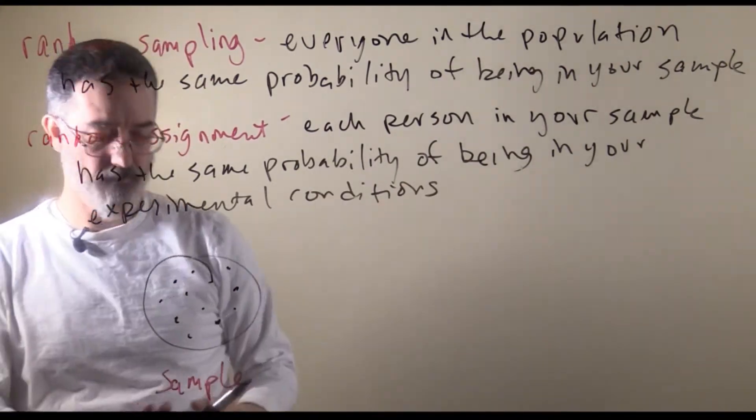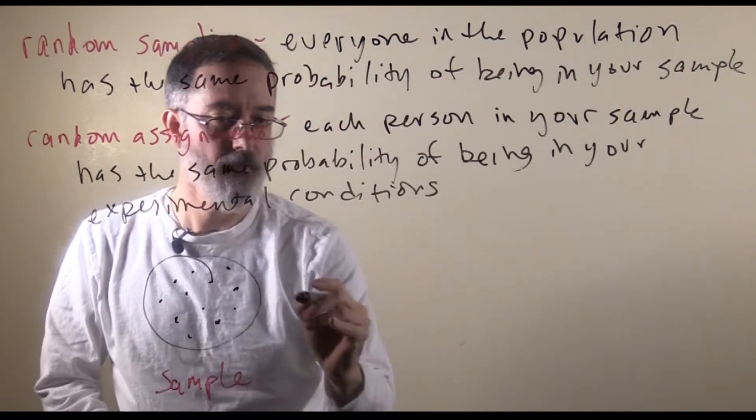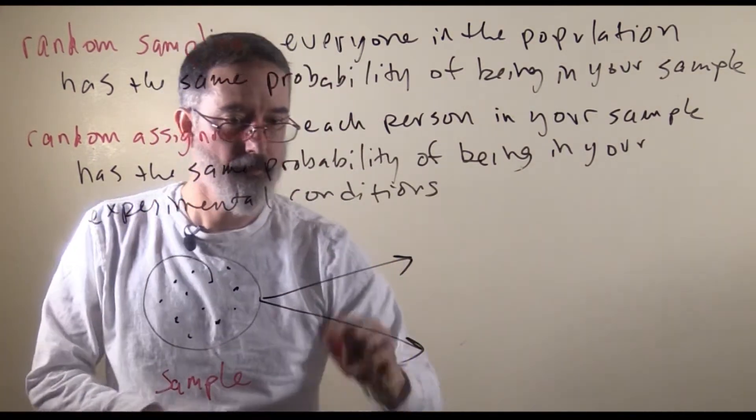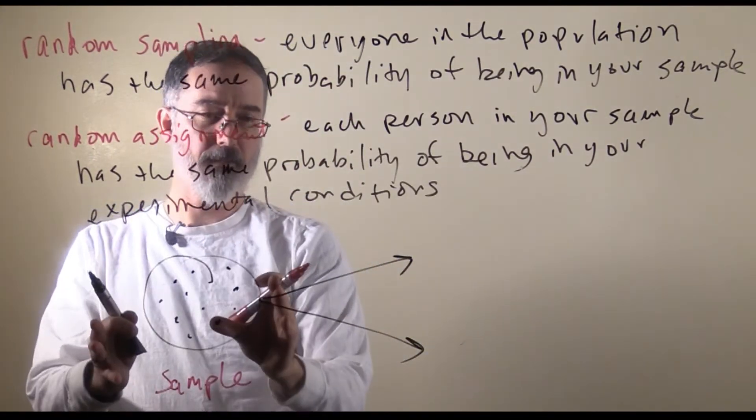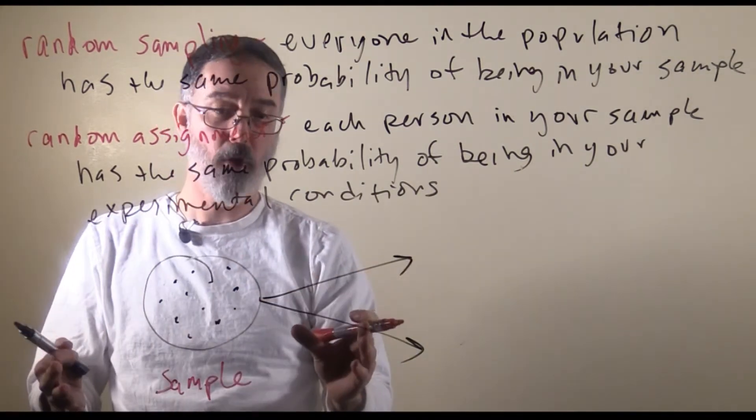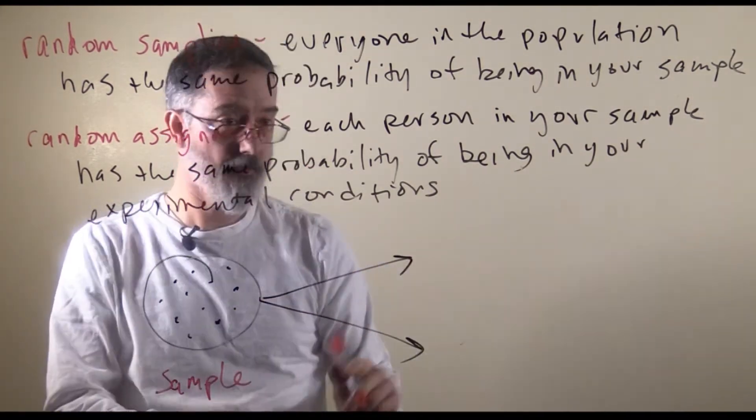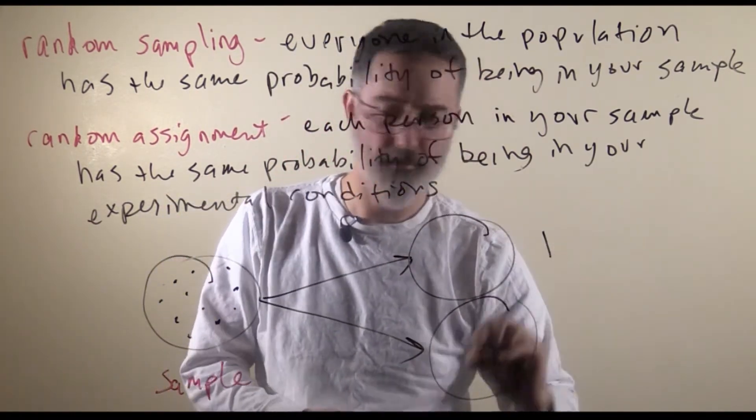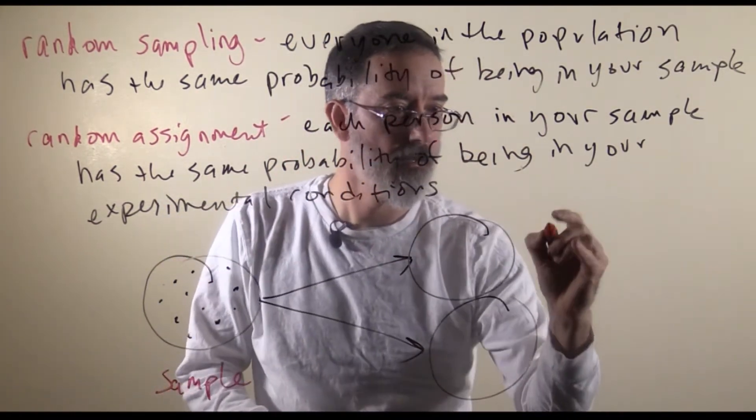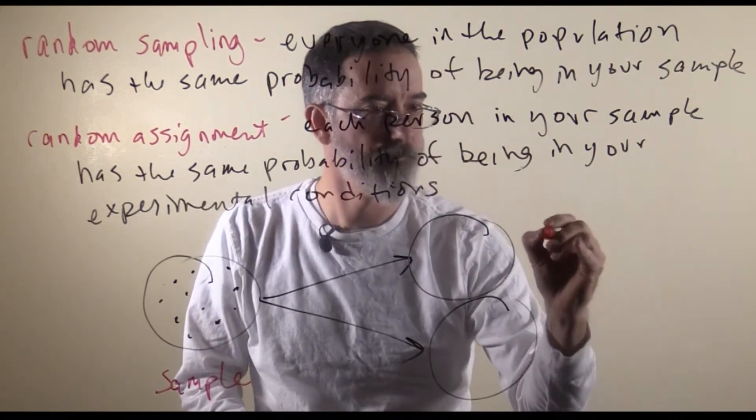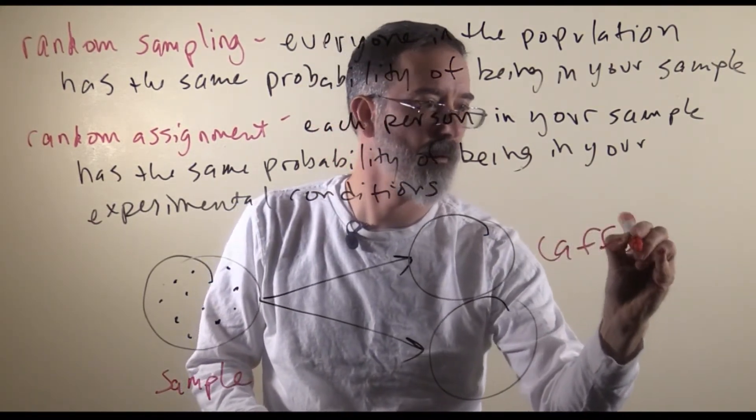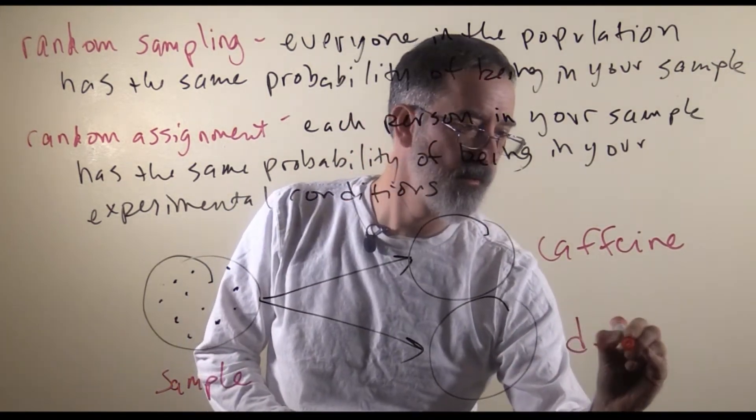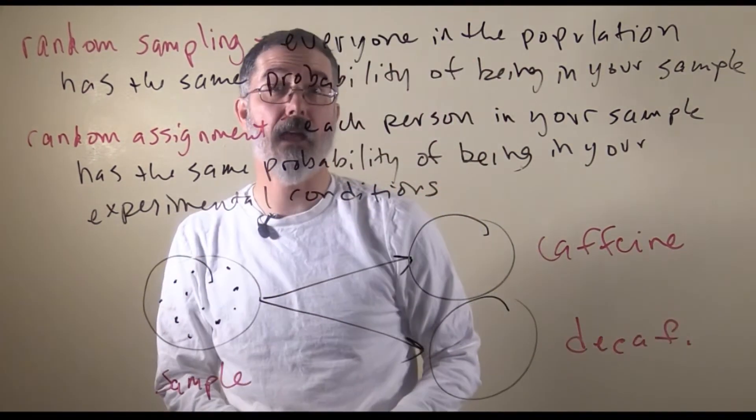Then, once you have your sample, then you could do this random assignment. You could have your participants show up to your lab. You flip a coin, and if it is heads, they are in your caffeine condition. If it is tails,